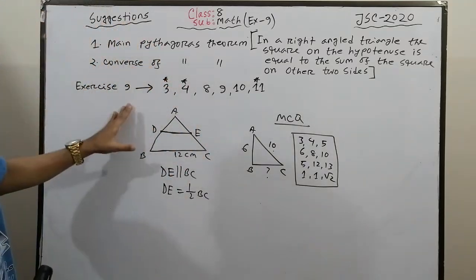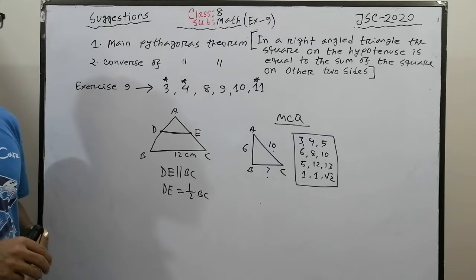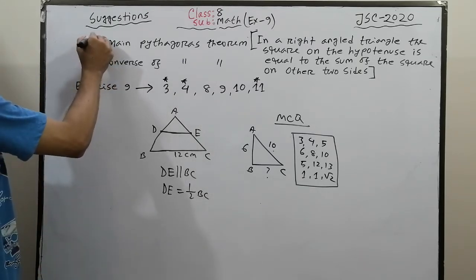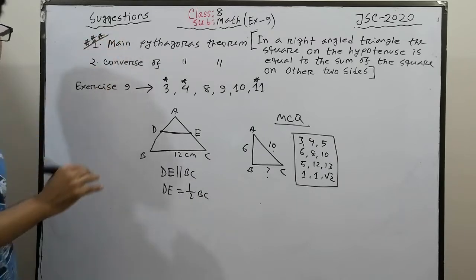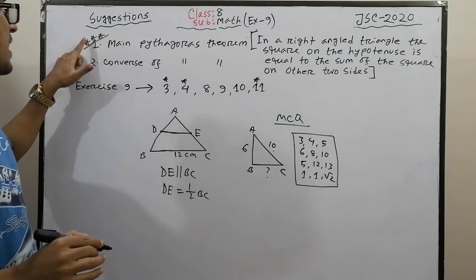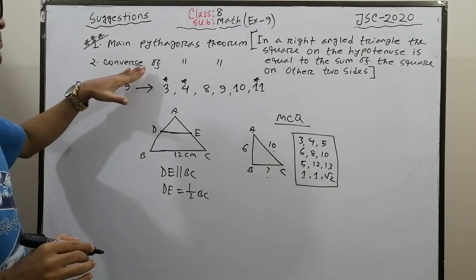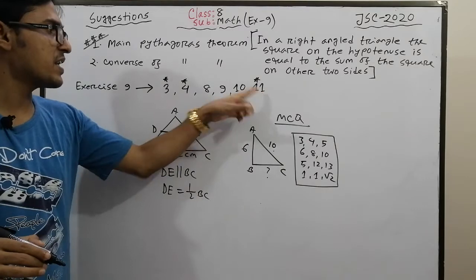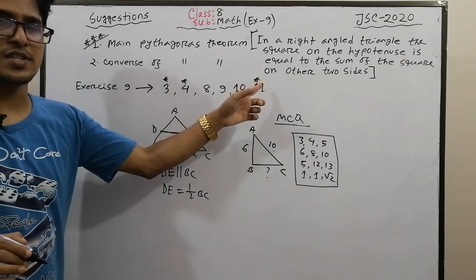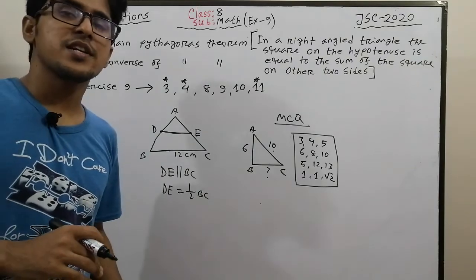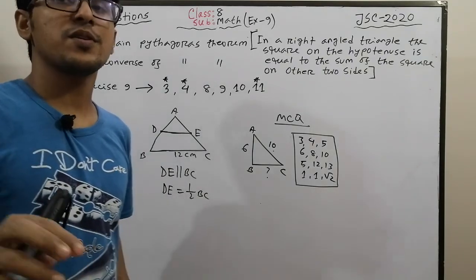This midpoint theorem is important. The converse is also important. So overall, questions 3, 4, 8, 9, 10, 11 are good to practice. These are important topics for the chapter. Thank you, follow and subscribe.